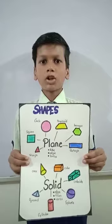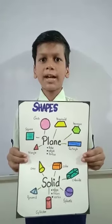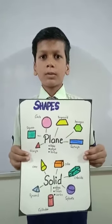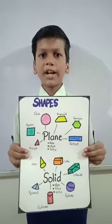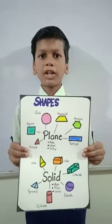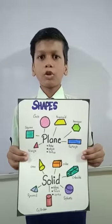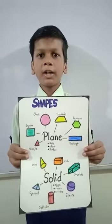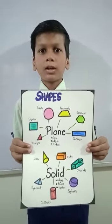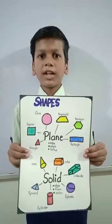Solid shapes are three-dimensional shapes as they have three dimensions: height, length, and breadth. The major types of solid shapes are cube, cuboid, pentagon, prism, pyramid, sphere, and cylinder.